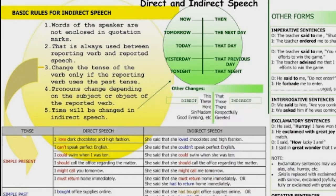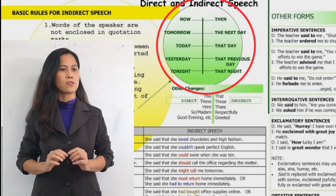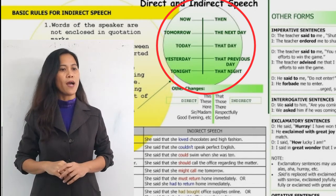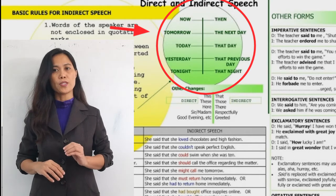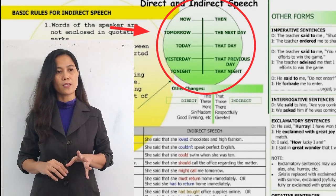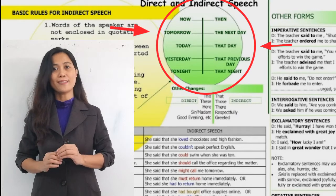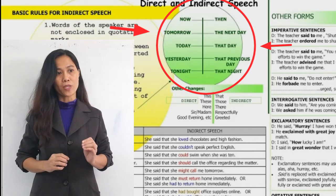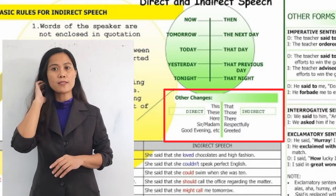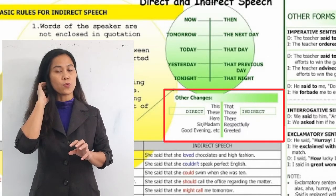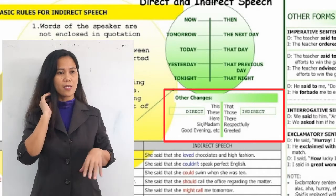Beside the yellow circle is the greenish circle. You have two columns there. The one on your left is for words you see in direct speech. The one on your right shows what happens to those words when changed to indirect speech — like 'now' becomes 'then,' and so on. Below the green circle, there are other changes: 'this' becomes 'that,' 'these' becomes 'those,' and so on.